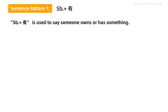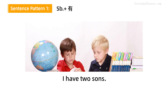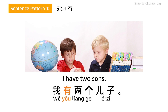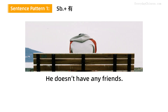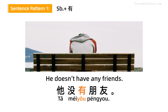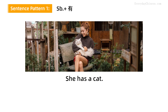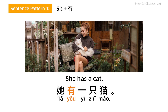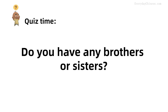Somebody有 is used to say someone owns or has something. For example: I have two sons — 我有两个儿子. He doesn't have any friends — 她没有朋友. She has a cat — 她有一只猫.